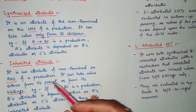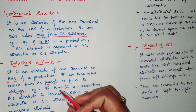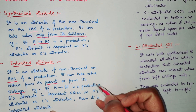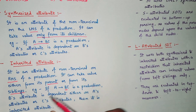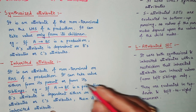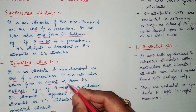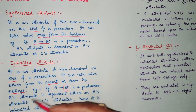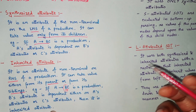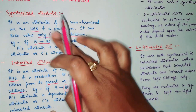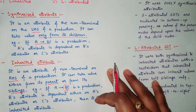On the other hand, for inherited attributes — again using the production A → BC, where A is the parent of both B and C — B's attribute is dependent either on A's attribute, because A is the parent of B, or on C's attribute, because C is the sibling of B. So B's value depends either on A (the parent) or on C (the sibling). If this is the case, we say it is an inherited attribute.